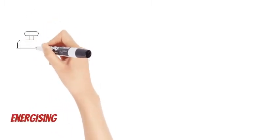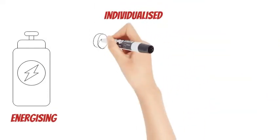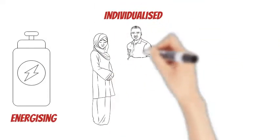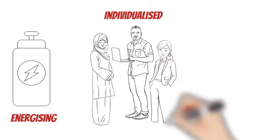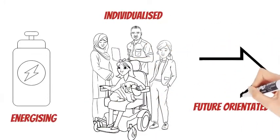Belonging cues all have at least one of three basic qualities. One, energizing. They invest energy in the exchange that is occurring. Two, individualized. They treat the person as unique and valued within the context of the whole group. And three, future orientated. They signal the relationship will continue and is safe.